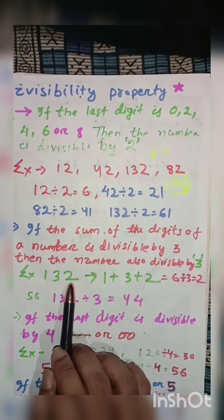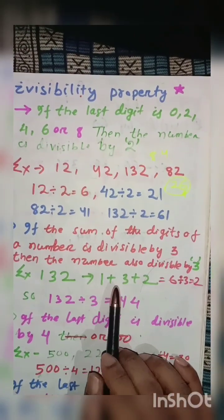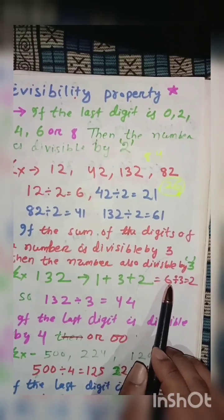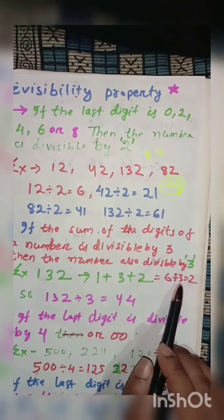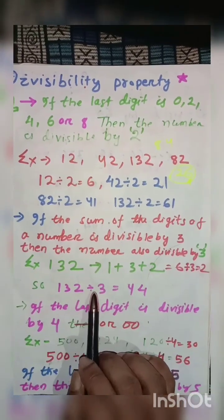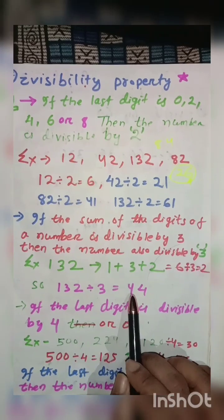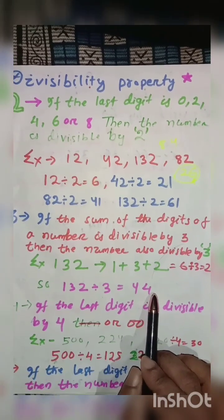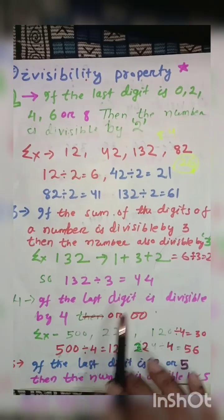Example here is given: 132. The sum of the digits is 1 plus 3 plus 2 equals 6, and 6 is divisible by 3. So undoubtedly 132 is also divisible by 3, and the answer is 44. I think you all are well understood by this property.